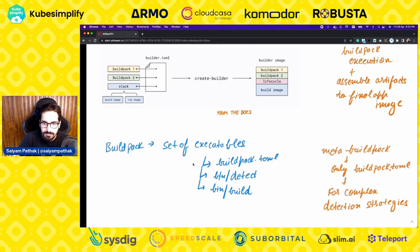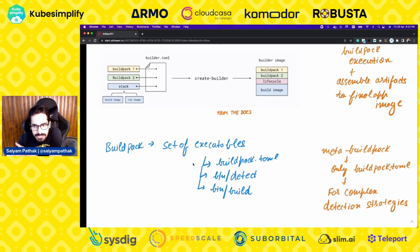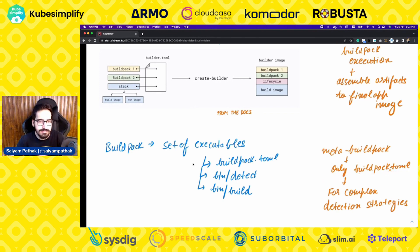The next concept is the Buildpack itself as a set of executables. It comprises a buildpack.toml and the executables — detect and build. There is also a concept of a meta buildpack, which only has a buildpack.toml, used for complex detection strategies.